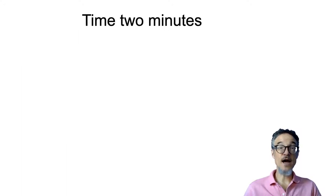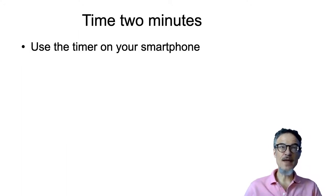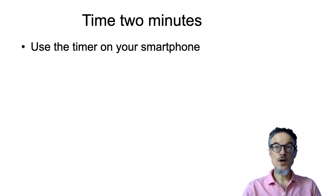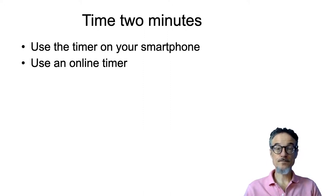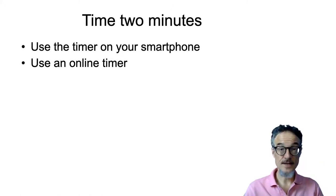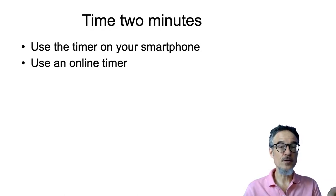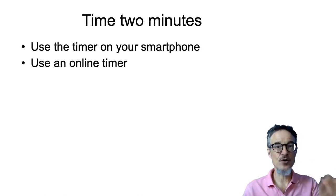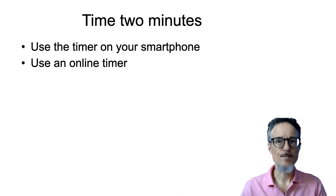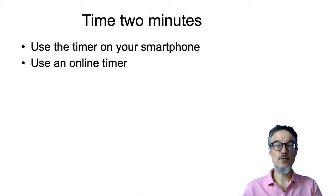And then we need to time two minutes. So you maybe you can do this on your own. If you have a timer, you may have a timer on your smartphone. You can use an online timer. I'm going to, if you stay here, I'm just going to time two minutes in this video. If you're going to do this on your own, then you can just pause this now. Use your own timer. And then when you come back, you can click to continue. So are you ready? Let's, if you're going to stay here, we can use the timer here. We're going to time two minutes and go.